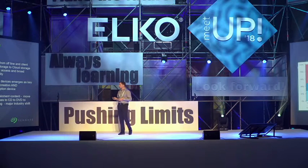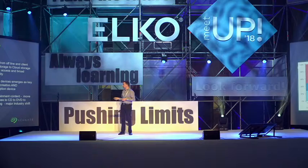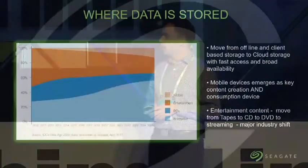In terms of where the data is going to be stored, we've been talking about growth in the enterprise space for a while. Most of the stuff you create even on personal devices like mobile phones or PCs gets uploaded to the cloud. The amount of data stored in big CSP cloud data centers is going to go to 60%. Mobile storage is going to grow significantly, not just because of the number of devices but because of growth in capacity. Entertainment content is going to get smaller because previously we got content in the form of tapes, CDs, DVDs, then Blu-rays, but in recent years we're all streaming — there's no need to keep anything locally.